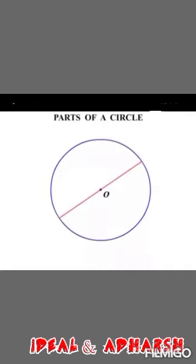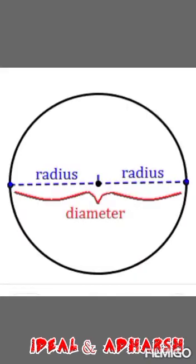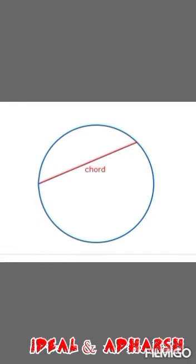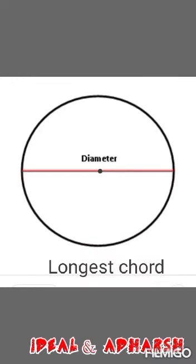Next, diameter. Diameter is an interval passing through the center joining any two points on the circumference. Diameter is equal to 2 radii. Next, chord. Chord is an interval joining two points on the circumference. The longest chord is called the diameter.